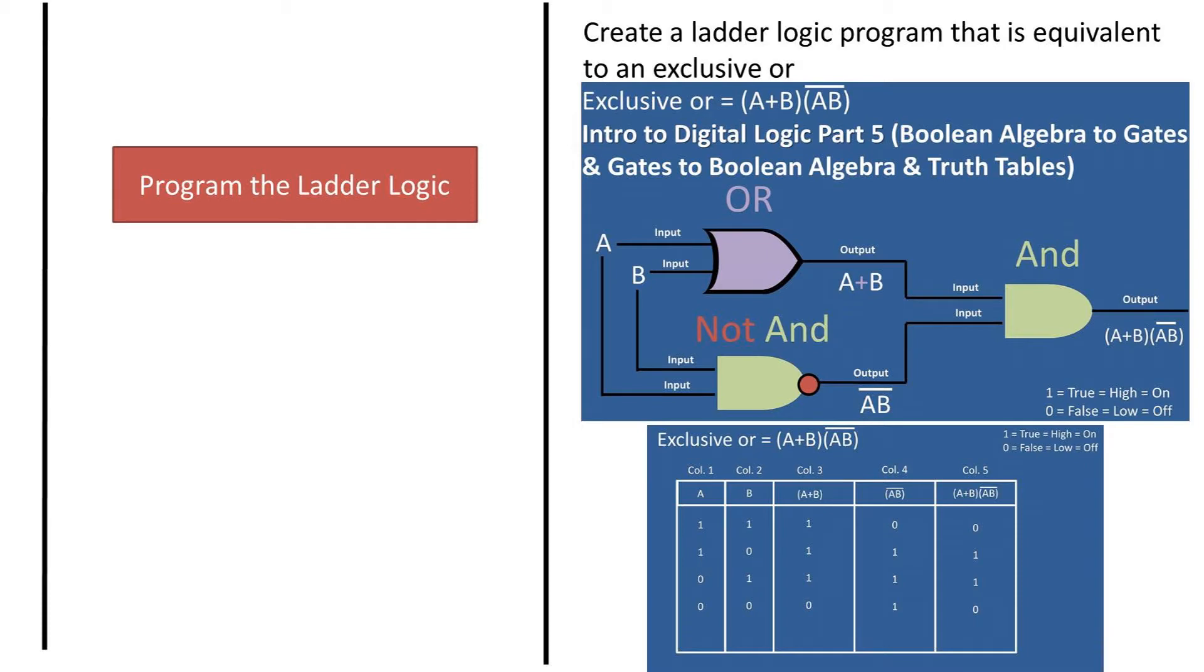An exclusive OR being a set of logic operations that is true or on when only one of the inputs, A and B in this case, is true. I have listed the truth table on this slide for your reference. The exclusive OR was covered in Intro to Digital Logic Part 5.